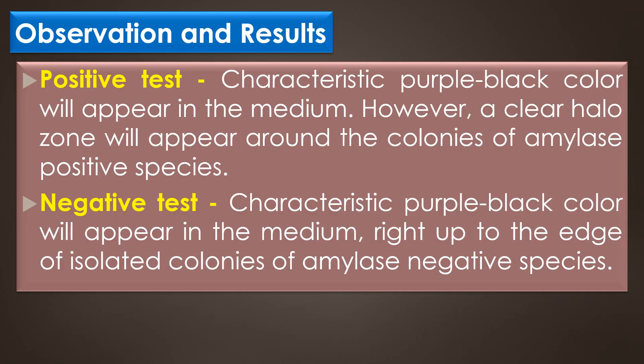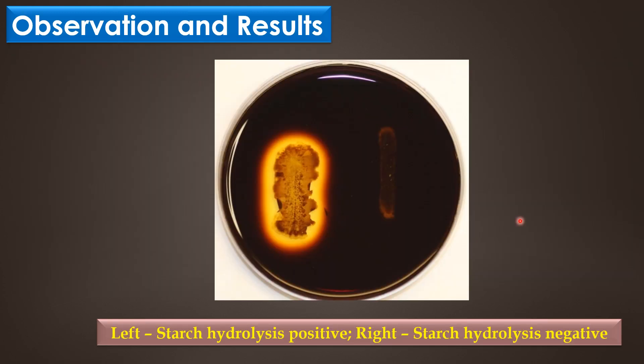Observation and results of the starch hydrolysis test: In a positive test, a characteristic purple-black color will appear in the medium; however, a clear hollow zone will appear around the colonies of the amylase positive species. In a negative test, the characteristic purple-black color will appear right up to the edges of the isolated colonies of amylase negative species. This image shows both starch hydrolysis positive and negative results. The zone of clearance indicates a positive result, while no zone indicates a negative reaction.